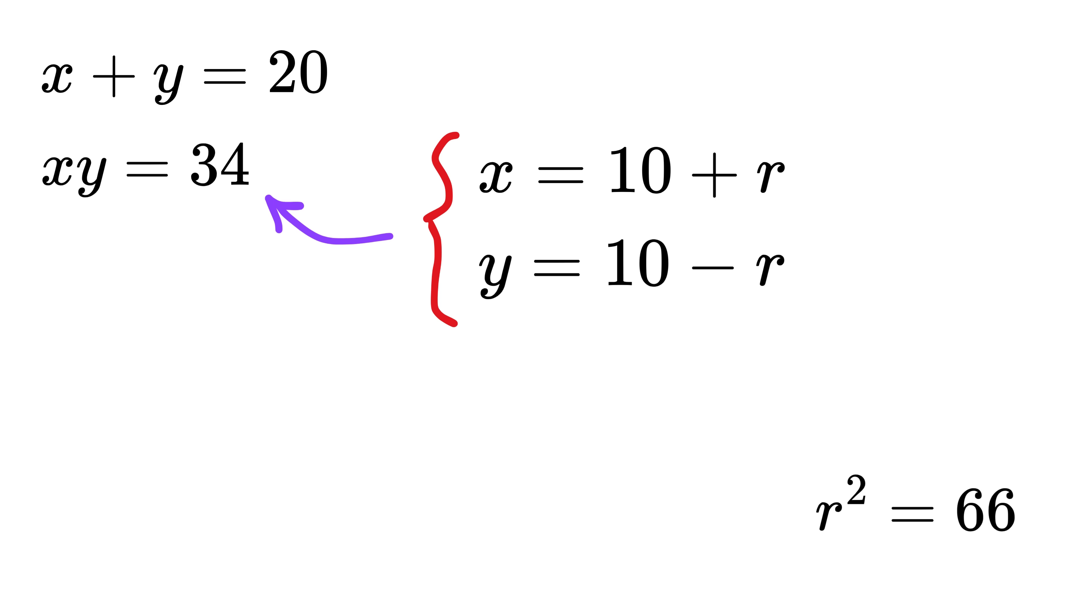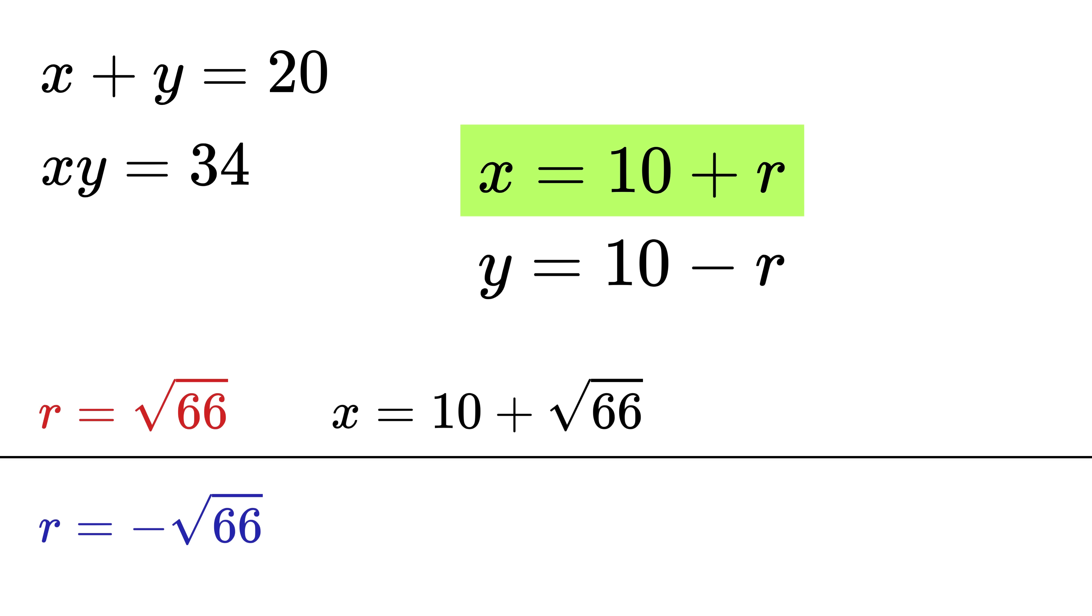Taking the square root of both sides, we get r = ±√66. So, x = 10 + √66 and y = 10 - √66. And for the negative value of r, we get x = 10 - √66 and y = 10 + √66.